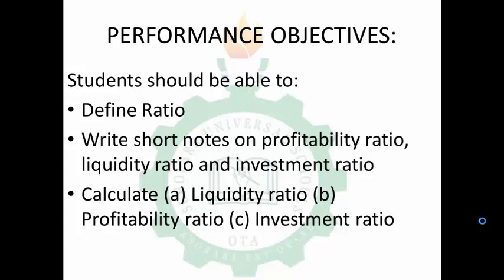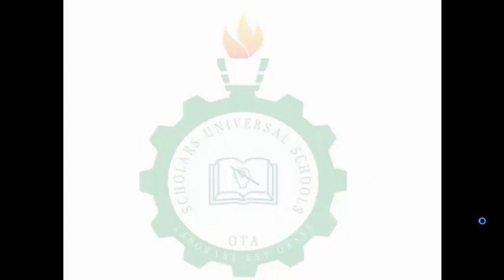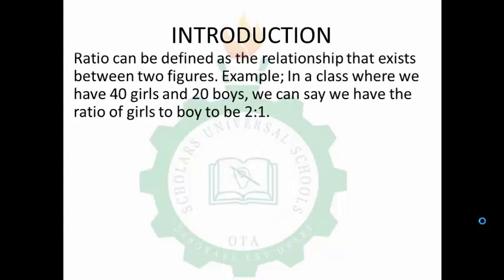When we talk about ratio — as discussed in the previous class — ratio is when we are comparing two items or two numbers together. We define ratio as the relationship that exists between two figures. For example, in a class where we have 40 girls and 20 boys, the ratio of girls to boys is 2 to 1.